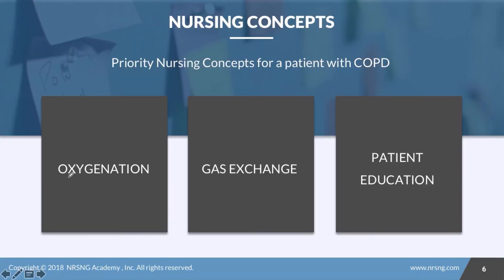So our priority nursing concepts for patients with COPD are pretty obvious. Of course oxygenation and gas exchange. Be careful that we don't over oxygenate the patient and put them at risk for CO2 toxicity. And then patient education is important to teach them how to manage their symptoms, use inhalers and safety precautions, especially if they're on home oxygen. Make sure you check out the care plan and case study attached to this lesson to see more details about nursing interventions and what it's like to actually care for a patient with COPD.